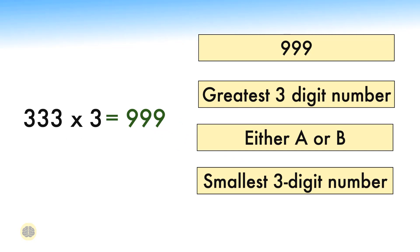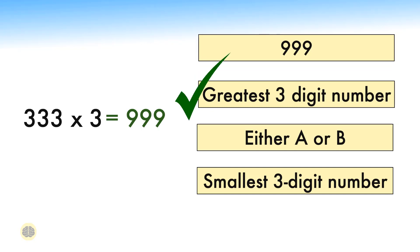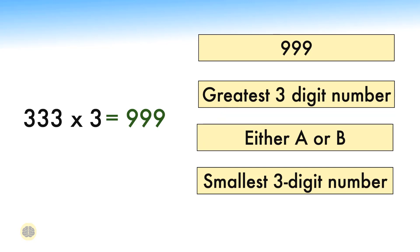Let's tally our answer with the given options. Option A is 999, which matches our answer, hence option A is correct. Option B says the largest three-digit number, which is 999, and the answer we obtained is 999 too, so option B is correct as well. Option C states both option A and option B are correct. So the correct answers are option A and B. While solving questions like these, we should not always jump straight to calculating the whole value. We should always strive for a logical approach by clearly looking at all options and finding a trend. All four options should be checked thoroughly.